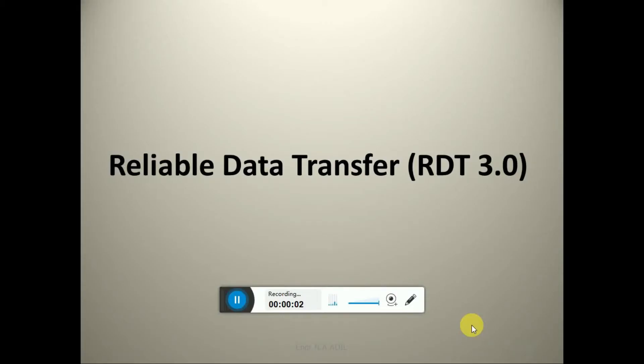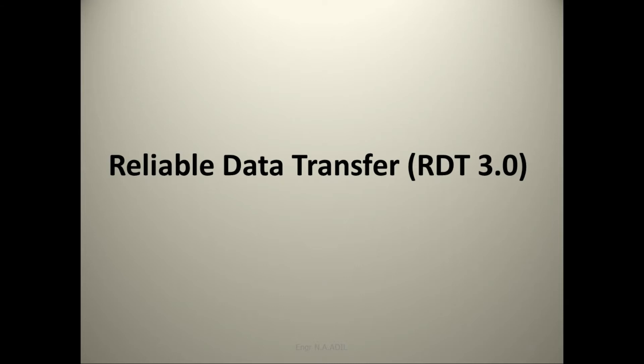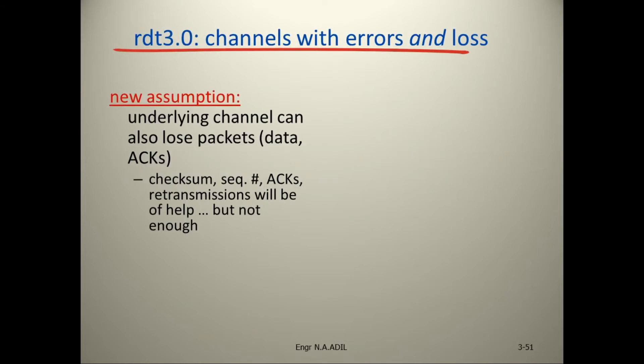Astounding viewers, today we will start with the topic of reliable data transfer RDT 3.0 — channels with errors and loss. RDT 3.0 is used for channels with errors and loss. New assumption: the underlying channel can also lose packet data and acknowledgements.